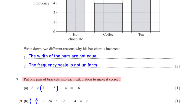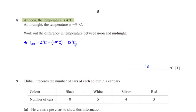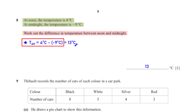Negative 2 all squared is 4, so 4 plus 24 divided by 12 minus 4 gives us 2. At noon the temperature is 4 degrees Celsius; at midnight the temperature is negative 9 degrees Celsius. Work out the difference in temperature. We subtract the lower temperature (−9°C) from the higher temperature (4°C), which gives us 13 degrees Celsius.